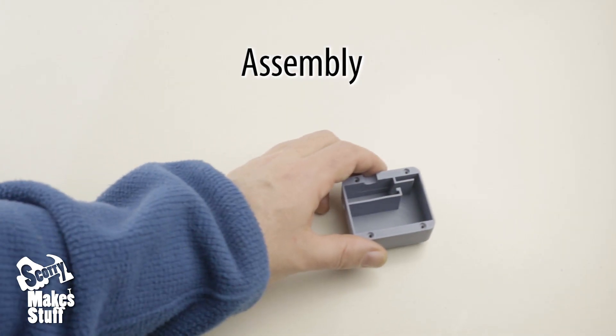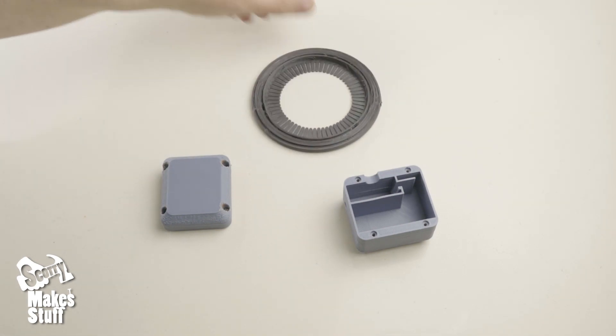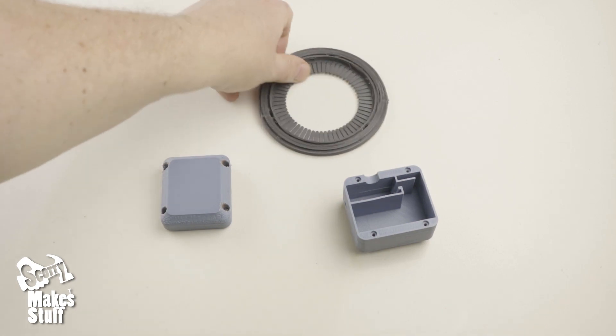Okay, and on to assembly. Now here's the 3D printed parts: the box bottom, the box lid, and the macro ring light holder. It's made out of a flexible TPU.